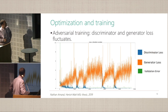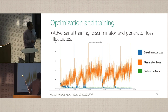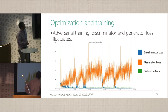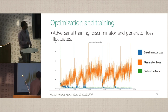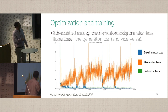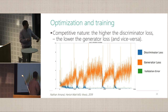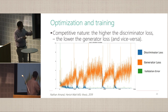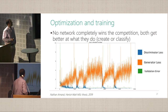This is the standard plot of loss functions: the discriminator loss in blue, the generator loss in orange, and the validation error. You can see the adversarial training — the error losses do fluctuate. The competitive nature is also seen: the higher the discriminator loss, the lower the generator loss, then a switch occurs where the generator improves and discriminator worsens, but then the discriminator takes over again. It looks like the GAN was doing the right thing — no complete win of one or the other.